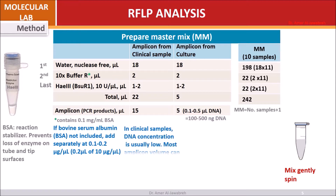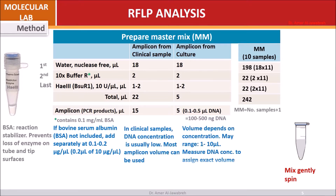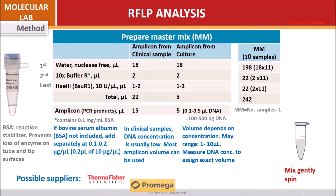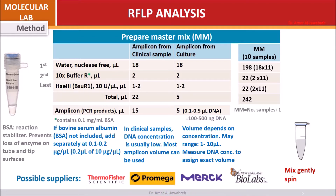For clinical samples, most amplicon volume is added. For culture samples, volume depends on DNA concentration and may range from 1 to 10 microliters. Measure DNA to assign the exact volume, or generally add 5 microliters. Possible suppliers include Thermo Fisher, Promega, and New England Biolabs.